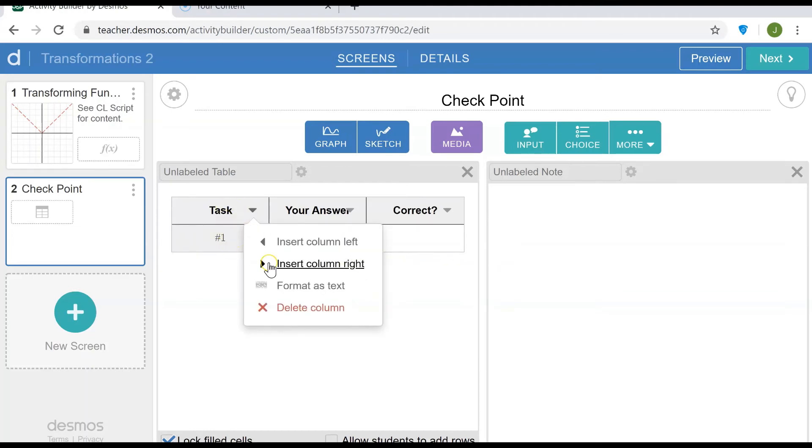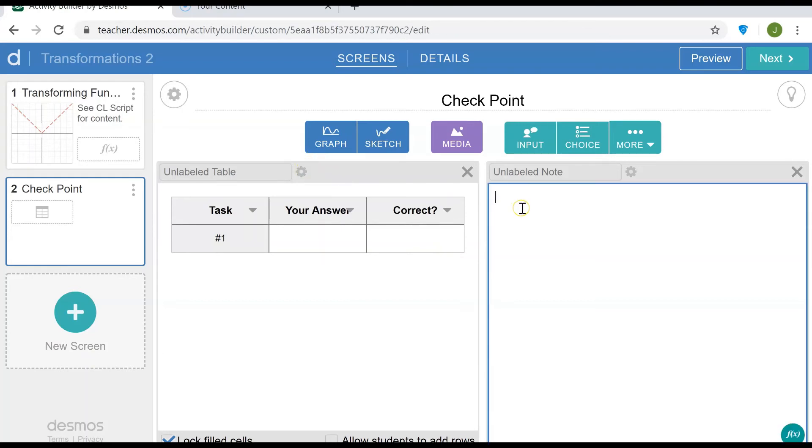Now in this task column I'm going to format as text and I'm going to do the same thing with the correct column. The your answer column, because it's a formula, I'm going to keep that with mathematical formatting. Now the second and third column will be defined in the computation layer. And in the note let me just give some directions: use the table to check your work.